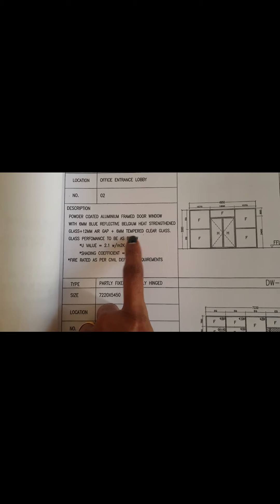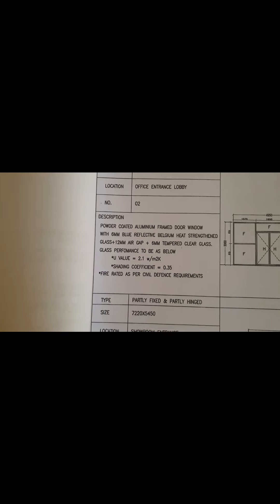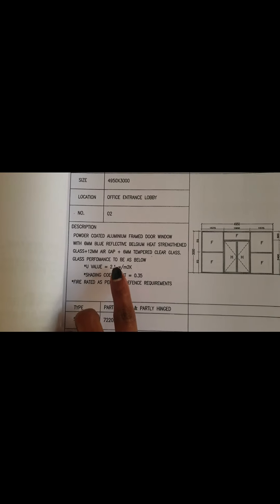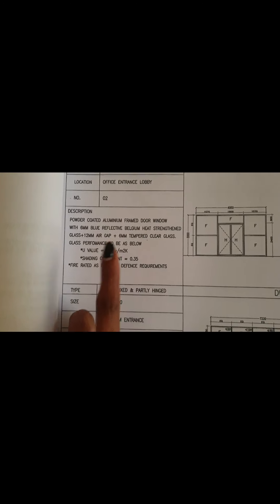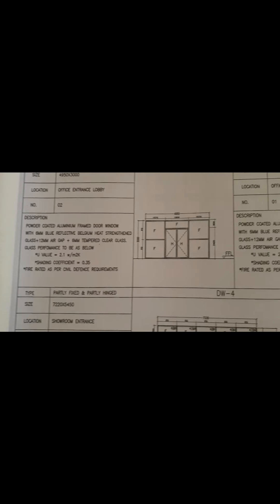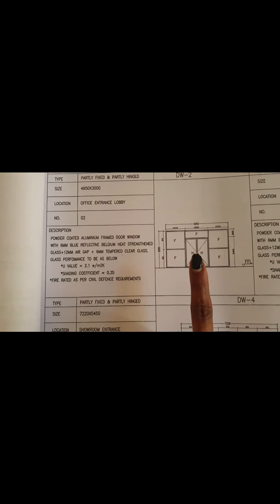The next one, DW2, has a U-value and shading coefficient specified. Here they have given 6mm blue reflective Belgium heat-strengthened glass plus 12mm air gap plus 6mm tempered clear glass. For all glass, we always have to take a quotation. Some companies have their own glass manufacturing; otherwise we have to take a quotation from outside.